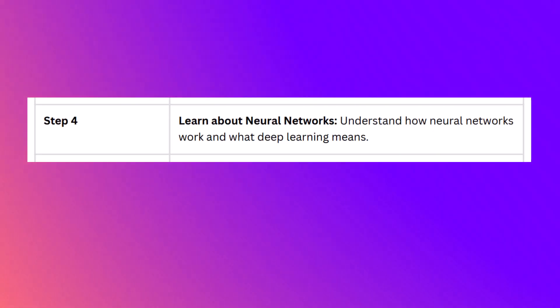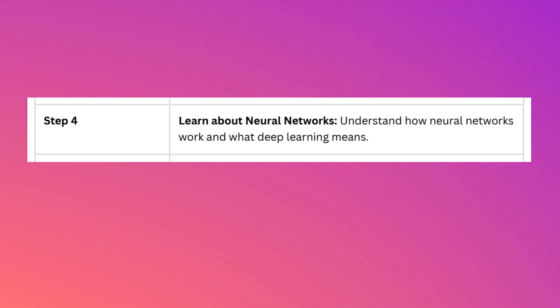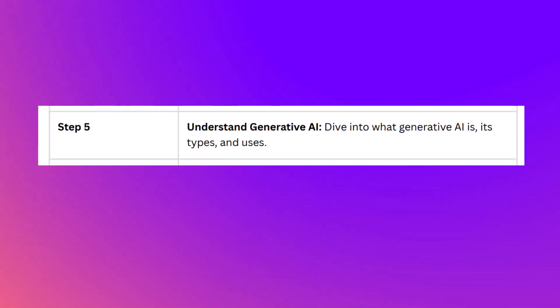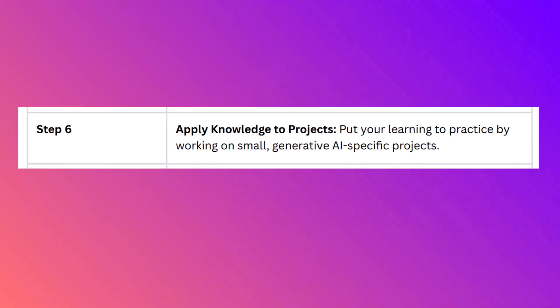Step four: learn about neural networks — understand how neural networks work and what deep learning means. Step five: understand generative AI — deep dive into what generative AI is, its types, and its uses. Step six: apply your knowledge to projects — put your learning into practice by working on small generative AI-specific projects.